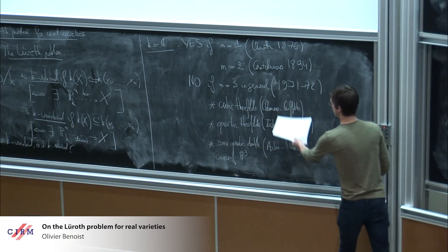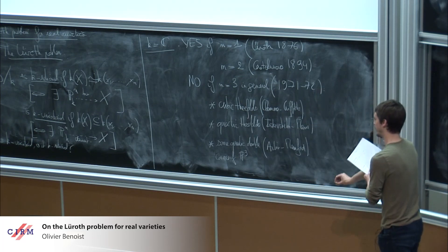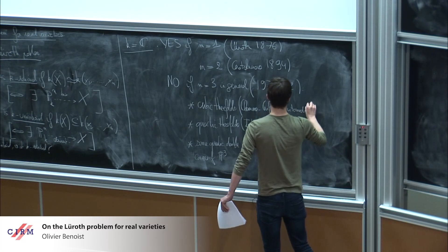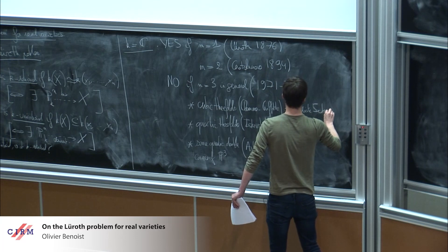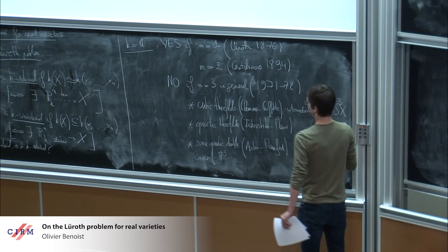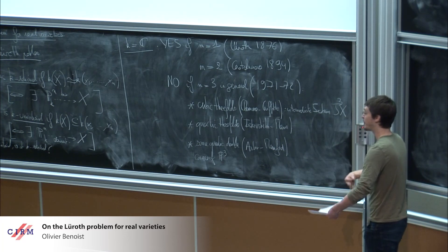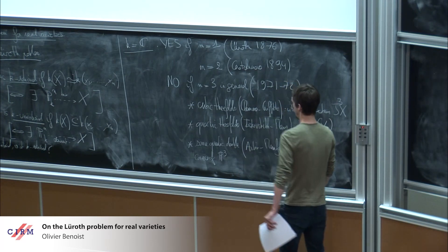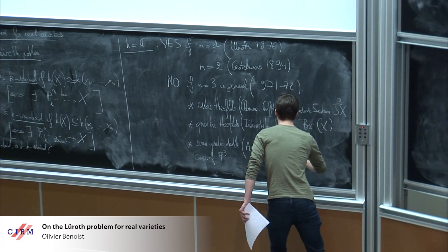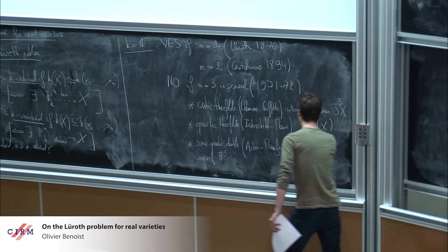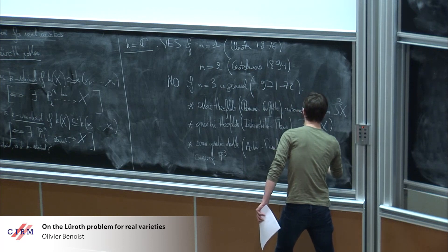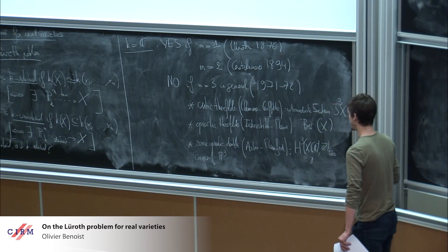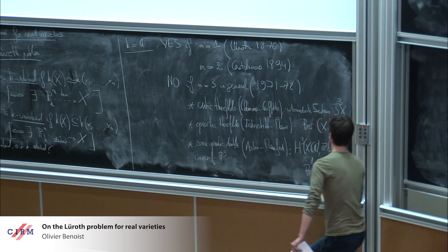The techniques of these three groups of authors were completely different. Clemens and Griffiths looked at the intermediate Jacobian of X. Iskovskikh and Manin studied the group of birational automorphisms of X. Artin and Mumford looked at the invariant given by torsion in the third Betti homology group, which is the same as the Brauer group of the variety.